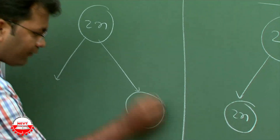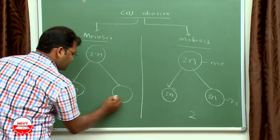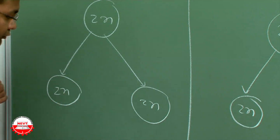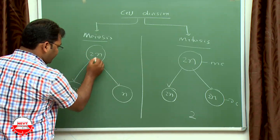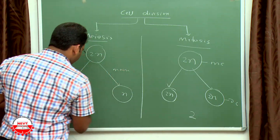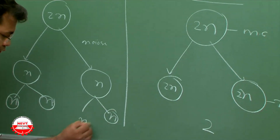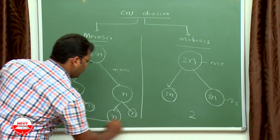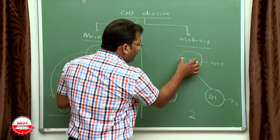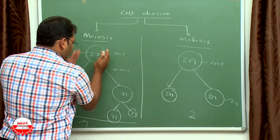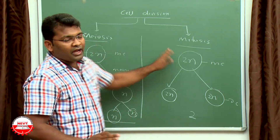In mitosis, one cell produces 2 cells, each with 2n chromosomes. In meiosis, one mother cell produces 4 daughter cells. In the first step of meiosis, 2n produces 2 cells with n chromosomes each. Then each n cell divides again to produce 2 more cells. So finally, one cell produces 4 daughter cells. In mitosis, the chromosome number in daughter cells is 2n — same as the mother cell. But in meiosis, the 4 daughter cells each have haploid or n number of chromosomes. That is the basic difference between mitosis and meiosis.